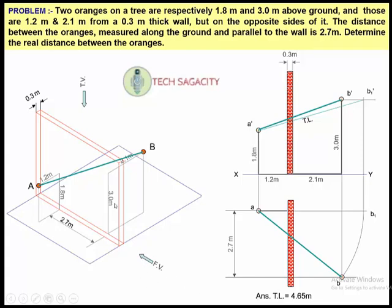The front view is the same. This is the same side. Orange A is placed here. In the front view, the wall is shown. The distances from the wall are 1.2 meters and 1.8 meters height for orange A. A-dash is marked in the front view. The height 1.8 meters and the distance 1.2 meters are plotted for A-dash.